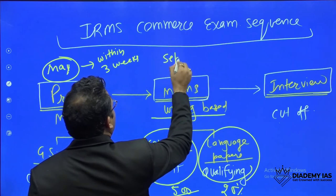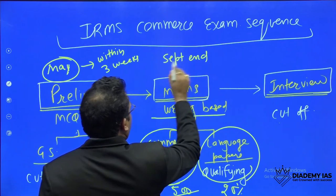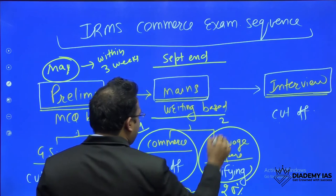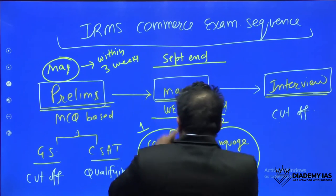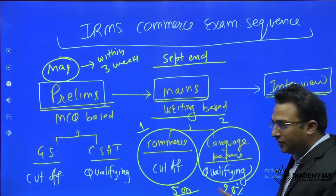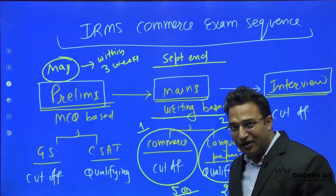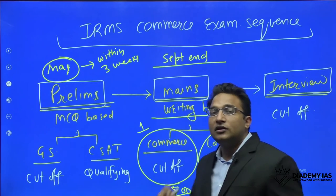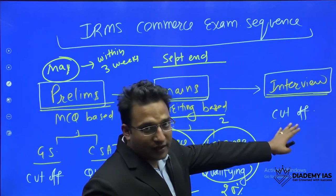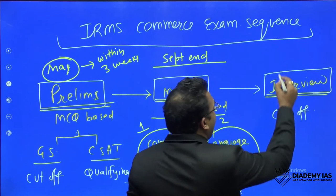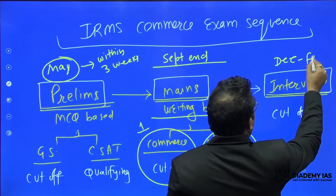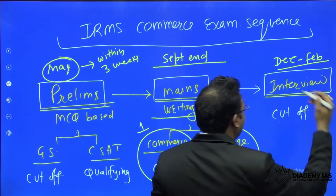The mains examination happens at the end of September and is held over two days — one day for commerce and the second day for the language paper. Based on the marks you score in commerce, if you qualify the language paper, your commerce marks will be counted. Based on the commerce marks, the top candidates will get the interview call.